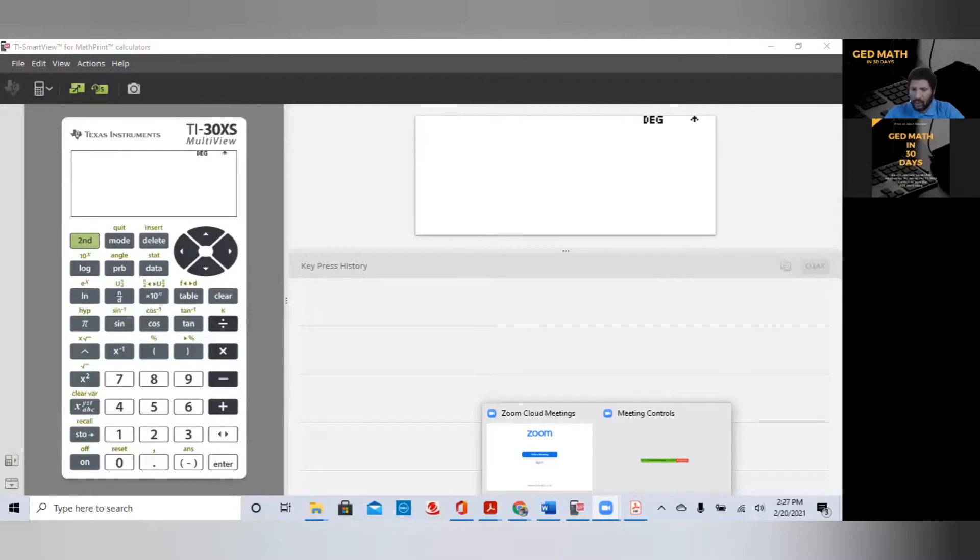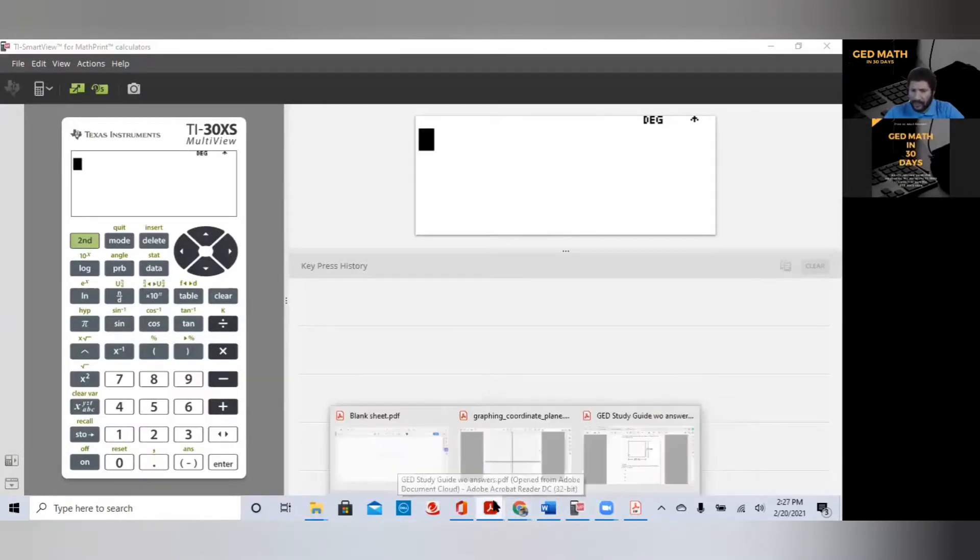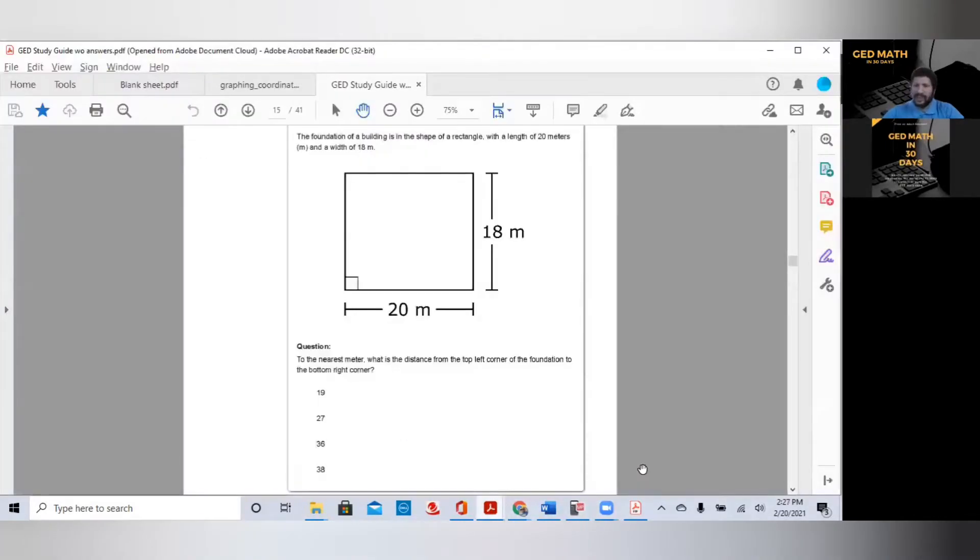First of all, I want to look at a problem. This is from the GED study guide, available for free on GED.com. Let's read this question. The foundation of a building is in the shape of a rectangle, with a length of 20 meters and a width of 18. Well, this doesn't look like a triangle. That's because you haven't read the question yet. To the nearest meter, what is the distance from the top left corner of the foundation to the bottom right corner of the foundation?